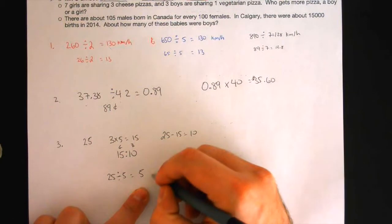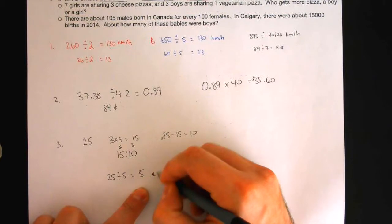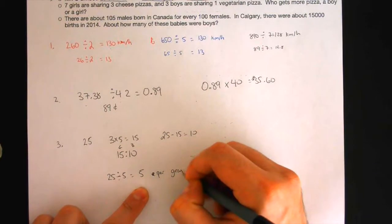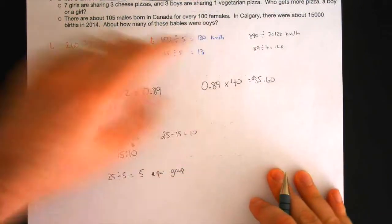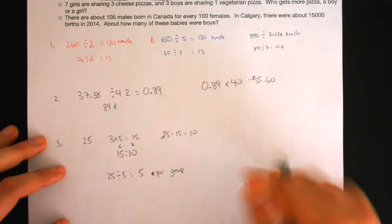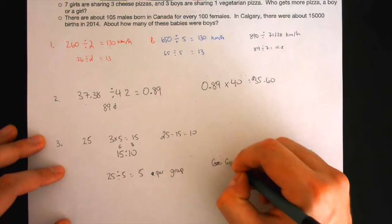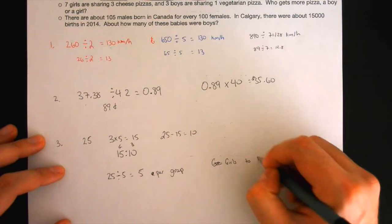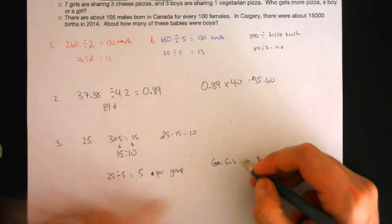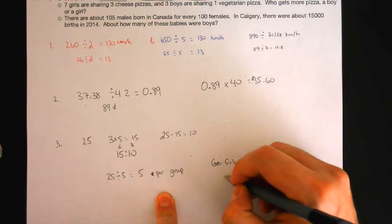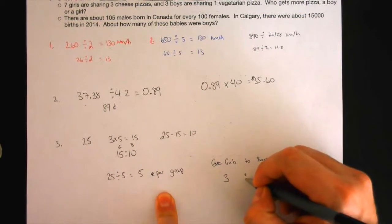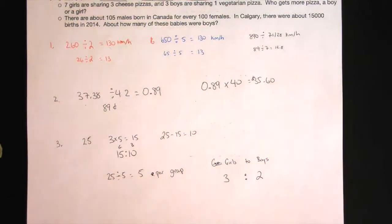25 divided by 5. Which would give you 5, which is how many in each group? So 5 per group. And they also tell you that there are three girls. Right there. Each, so? So, girls to boys. So if there's five people per group, and there's three girls, the boys has to be two in this situation. Okay?